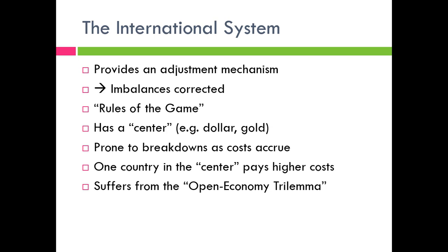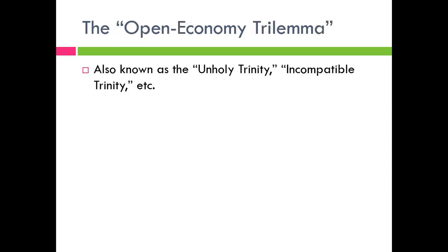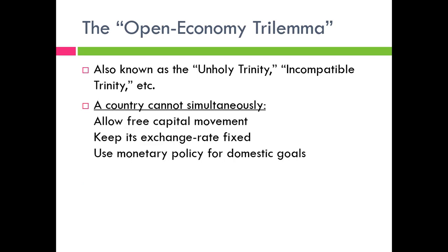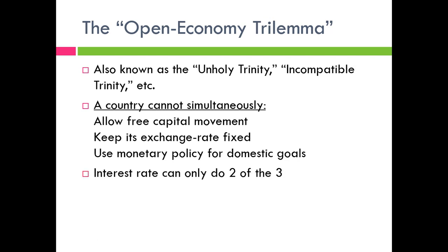The open economy trilemma — sometimes called the unholy trinity or the incompatible trinity — holds that there are three things that cannot be simultaneously maintained; you can only keep two at a time. One is free capital movement, another is a fixed exchange rate, and the third is an independent domestic monetary policy. Most free market economists think free capital movement is the good one to keep, so countries must choose between a fixed exchange rate or domestic monetary policy. This can be shown using the IRP (interest rate parity) equation.